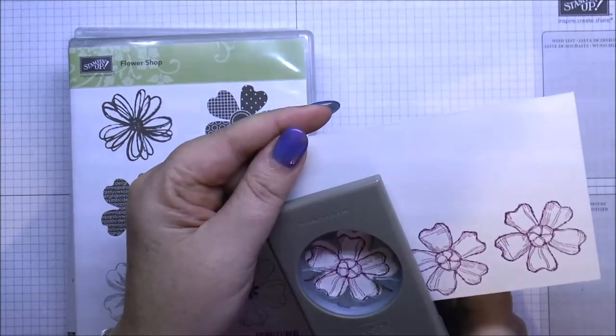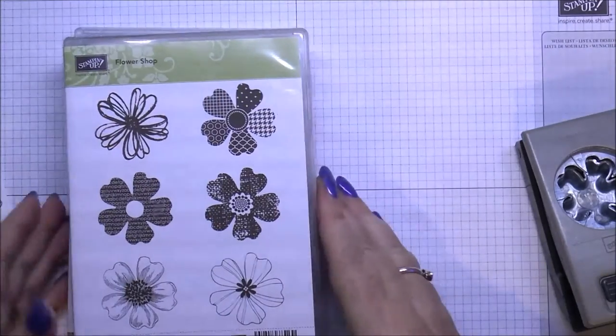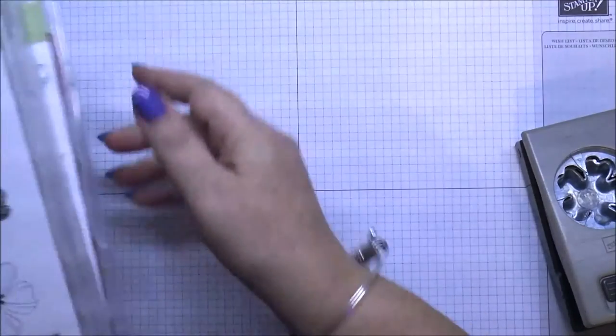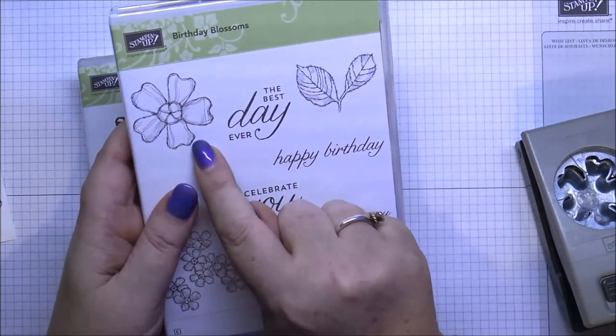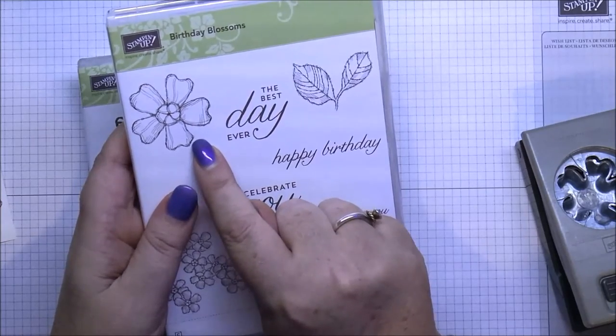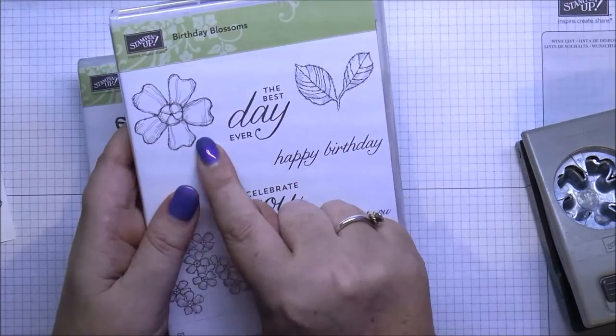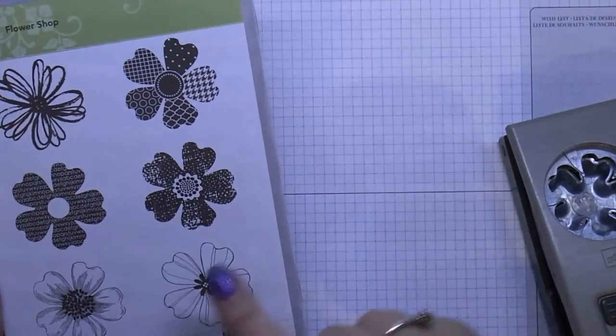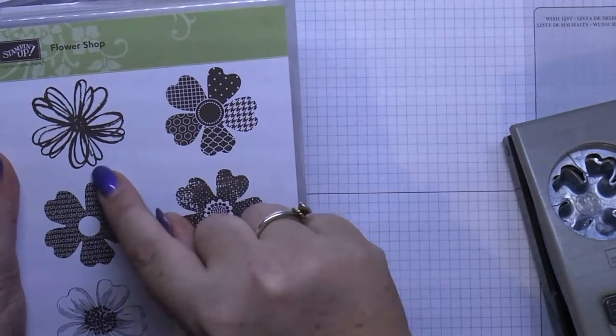What I have worked out is, especially on your birthday blossoms, see how you've got a petal here that's got the little chunk there, like the little flat edge? And on all these stamps here too, you've got the little flat edge. You've got one there, there, there, and it'll be on this one here as well.